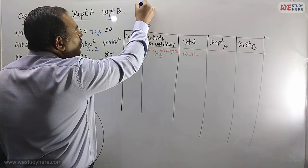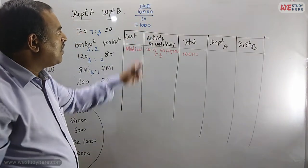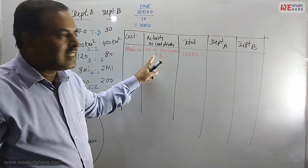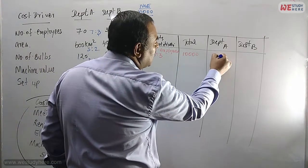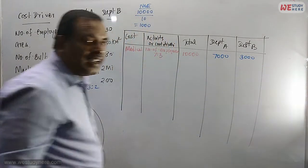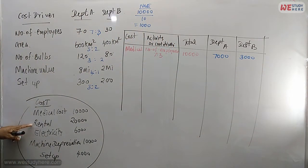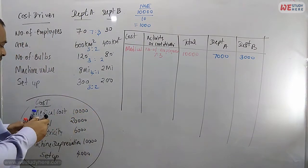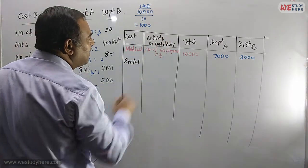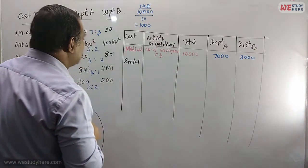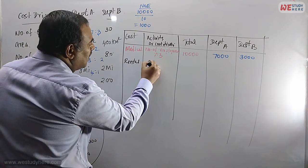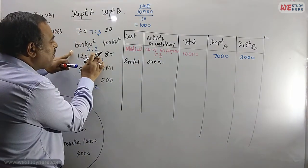One portion is 1,000. Department A has 7 portions: 7 × 1,000 = 7,000. Department B has 3 portions: 3 × 1,000 = 3,000. Next is rental. The cost driver for rental is area, and the simplified ratio we are using is 3 is to 2.